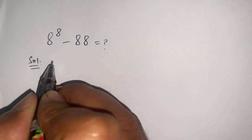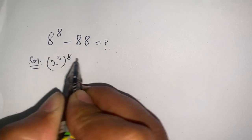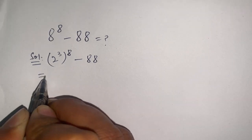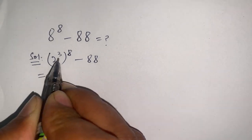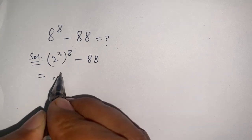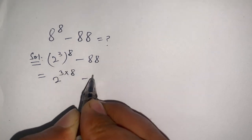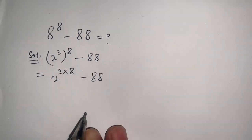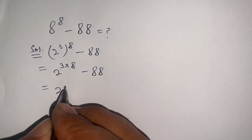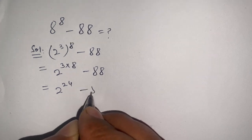8 can be written as 2 power 3, so the expression becomes (2^3)^8 minus 88. This gives us 2 power (3 times 8), which is 2 power 24 minus 88.